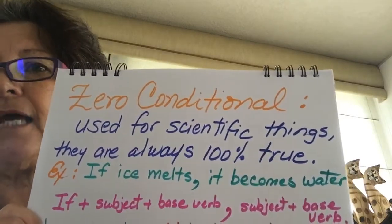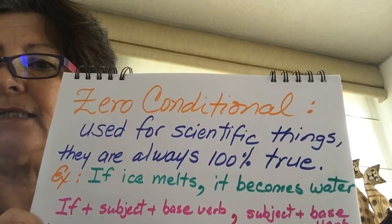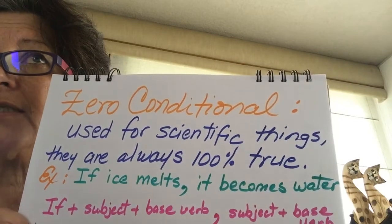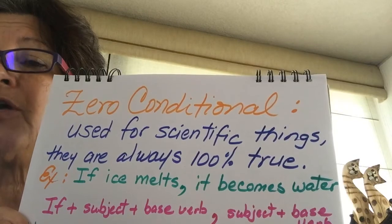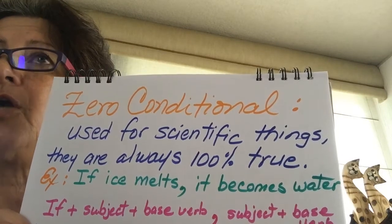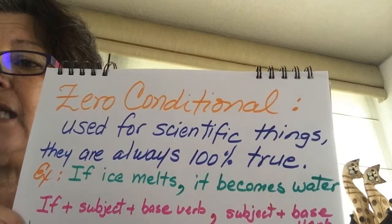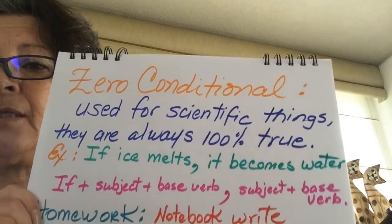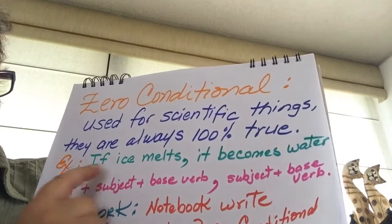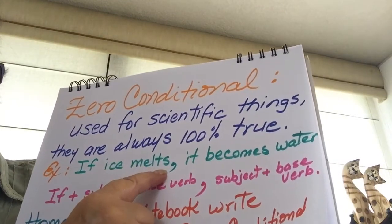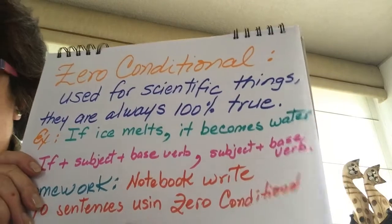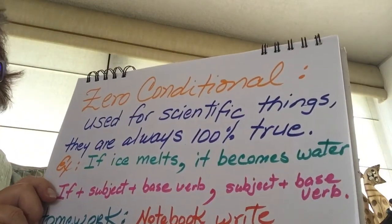Here you have an example. It says: if ice melts, it becomes water. It means that when we put ice under something hot like sunlight, it is going to become water — not chocolate or candy, only water. So this means it is a hundred percent sure. The formula is: 'if' plus the subject plus the verb in its base form, then the subject and another base verb.